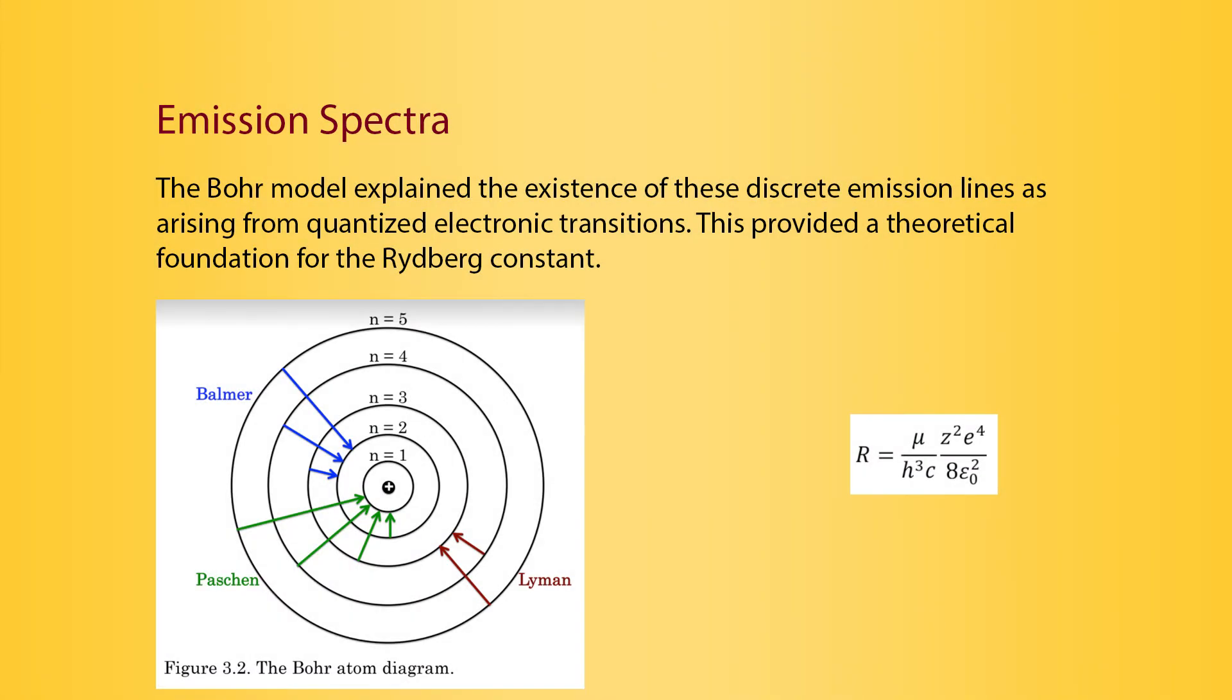The Bohr model explained the existence of these discrete emission lines as arising from quantized electronic transitions. This provided a theoretical foundation for the Rydberg constant.